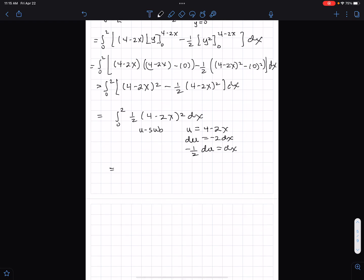So when I change things, I have 1 half, I just carried over the 1 half. 4 minus 2x becomes u squared. And then dx, as we see here, is negative 1 half du. At this point, I am going to change the bounds of integration. So what I see is when x equals 0, u equals 4 minus 2 times 0, which is 4. And when x equals 4, u equals 4 minus 2 times 4.